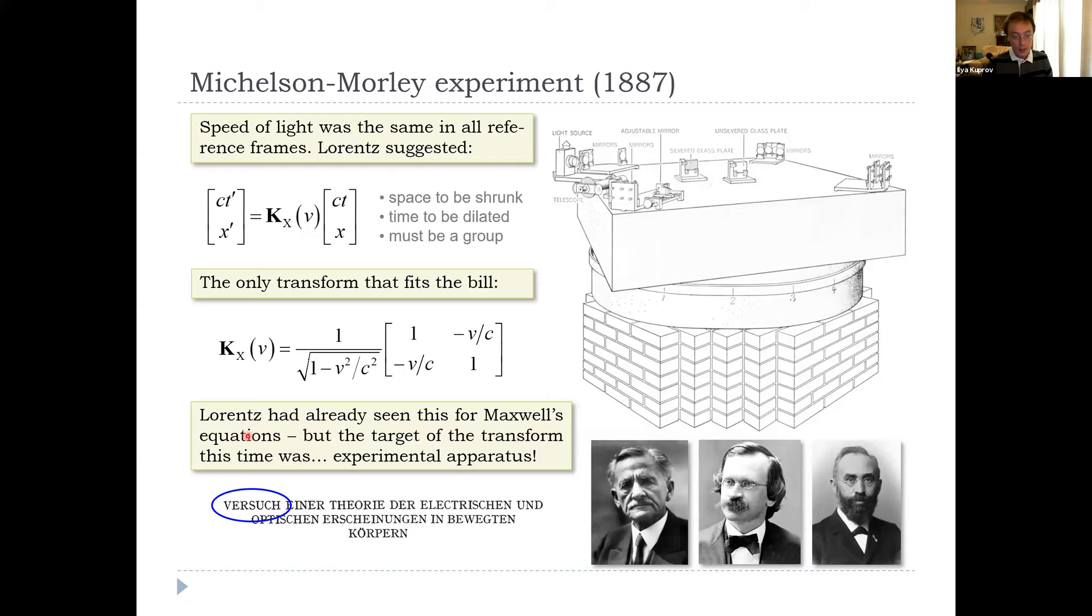It compresses the object in the direction of travel and also delays time. Now, Lorentz had already seen this in Maxwell's equations, which are Lorentz invariant, but in this case the target of the transformation wasn't some wave, it was the actual experimental apparatus, which was a bit shocking at the time. You can see the word in Lorentz's paper, 'Attempt at a theory of electric and optical interactions between bodies.' So that was actually an early indication that matter wasn't privileged relative to waves, that you had to apply the same transformations to matter and to waves in order to have consistent physics.